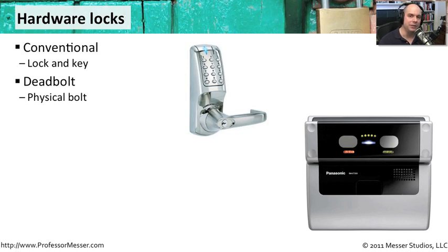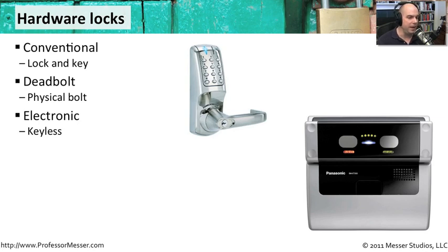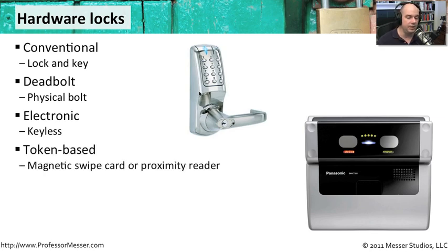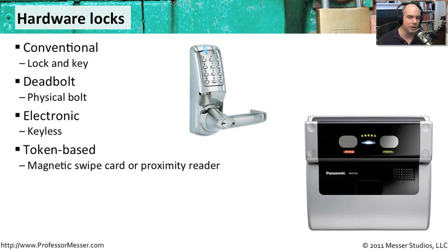Maybe you need to add a little additional hardware onto that door to make sure nobody's getting in. From an electronic perspective, we may be using things like keyless entry, where you have a badge, you scan a badge, maybe you're typing in numbers, and that keyless entry doesn't require a key. You simply type in the secret numbers and you're allowed access into the room. It could also be token-based. Those cards that we carry around have small chips inside of them, these little tokens. So we may have a proximity reader, or we may be physically swiping a card like we have with our credit cards. It may be a magnetic strip on those token-based hardware locks.